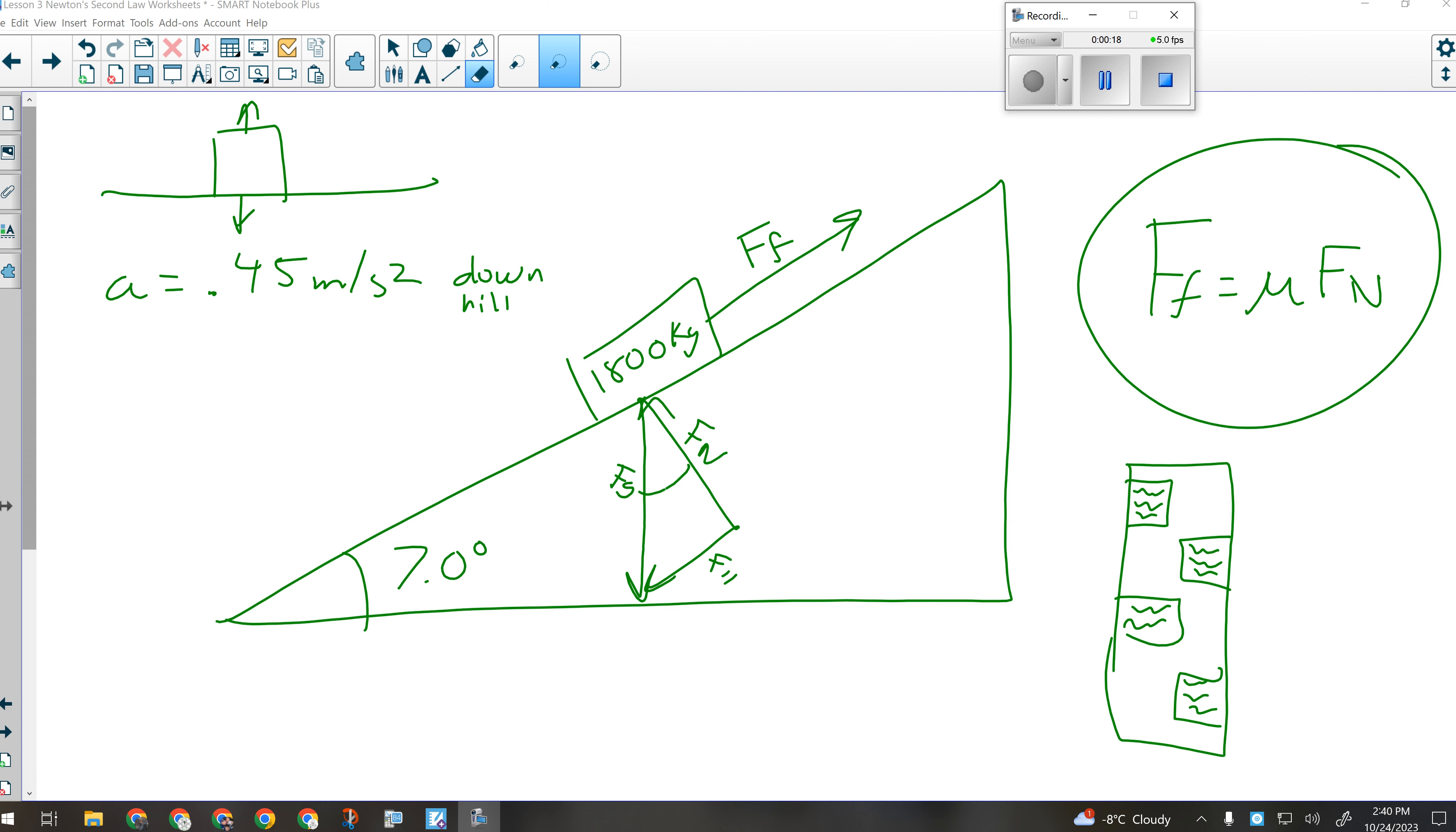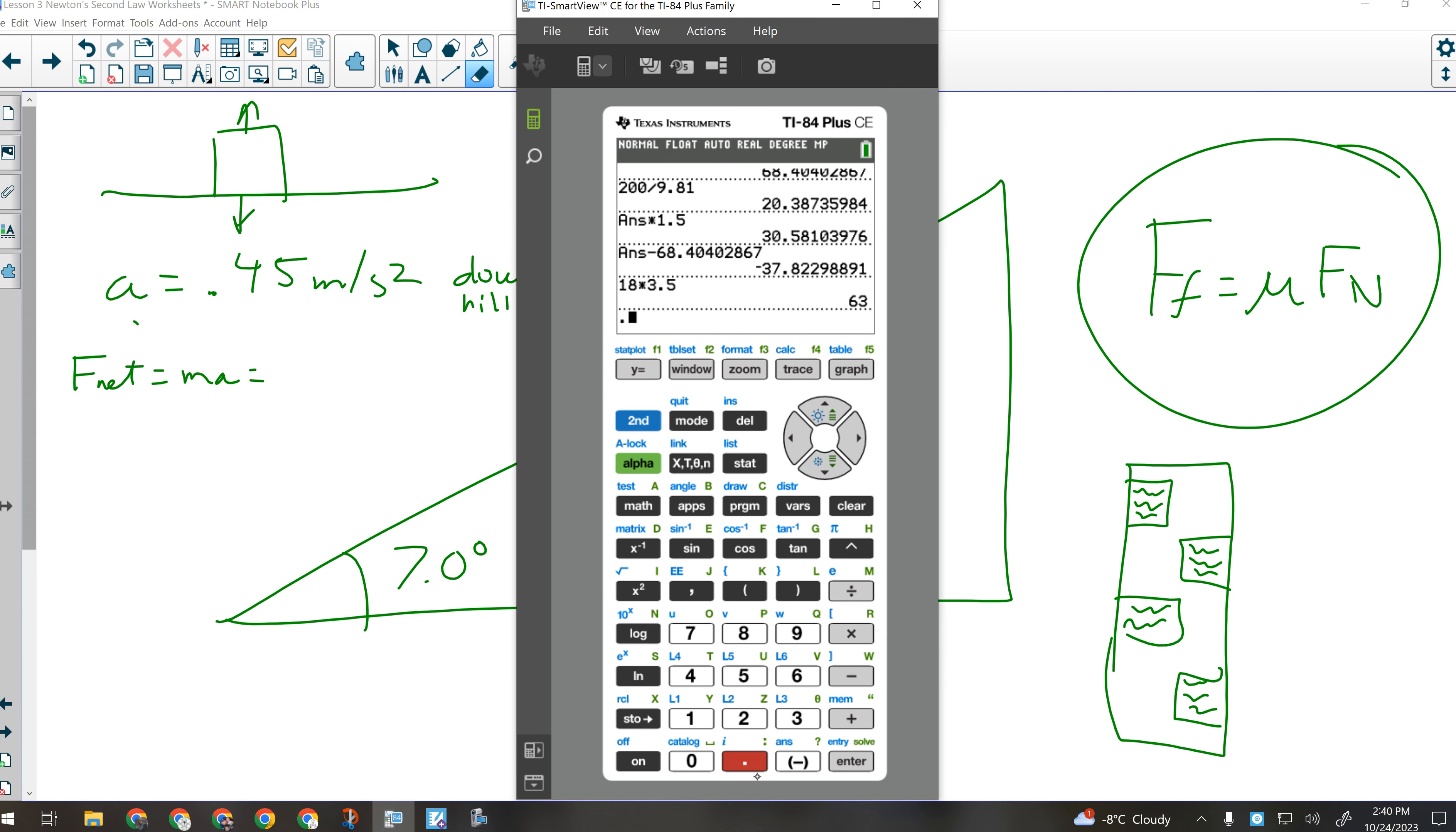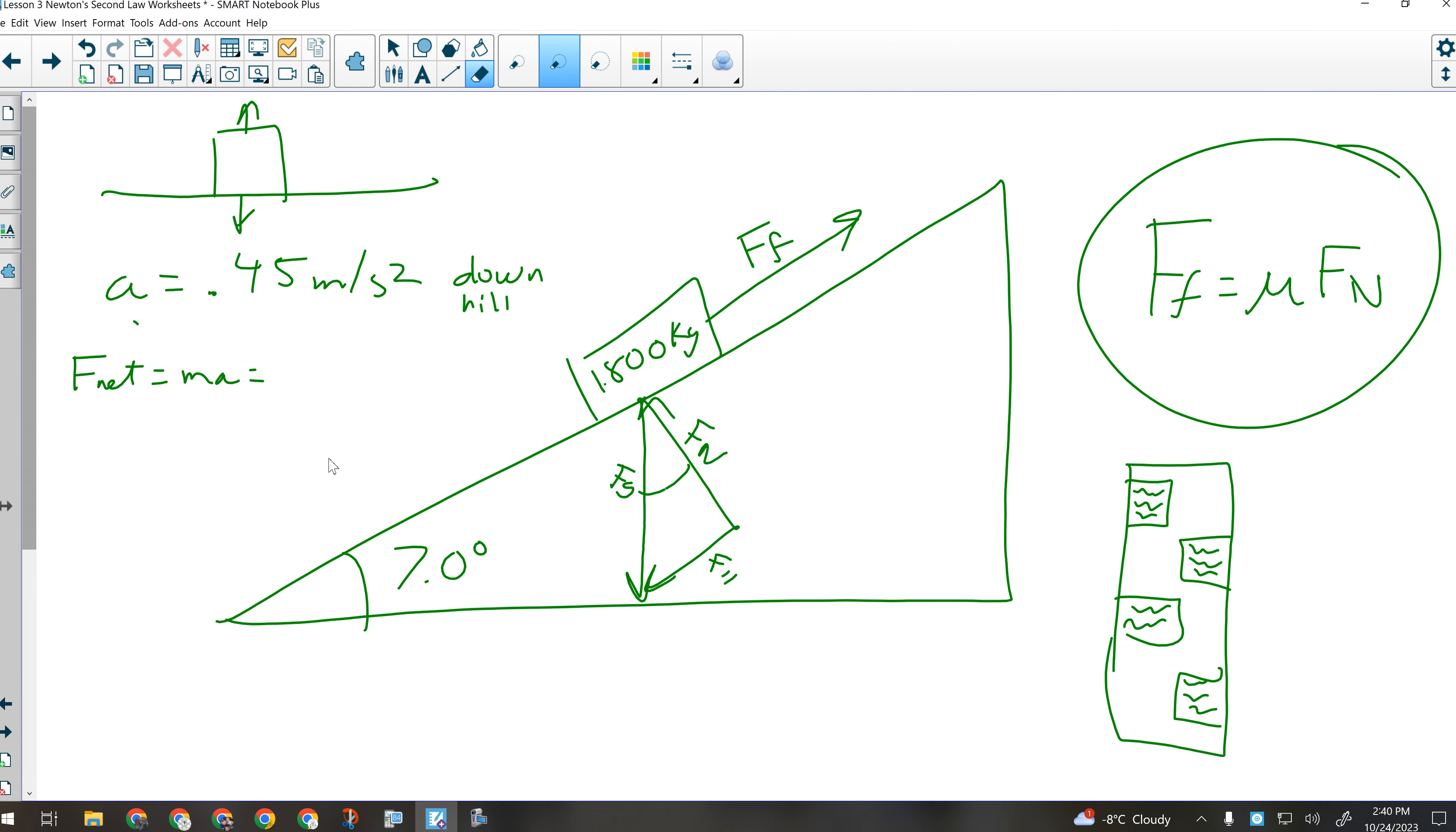So what can I calculate right now with acceleration and mass? Net force. I'm going to need that one. So F net is going to be M times A. So 0.45 times 1800, and we've got 810 Newtons worth of net force.